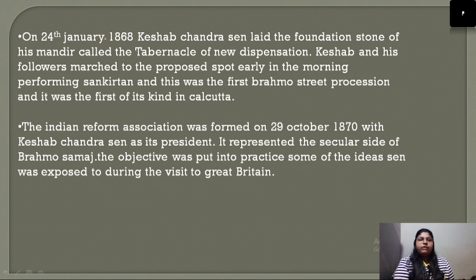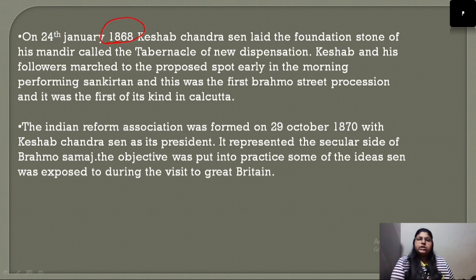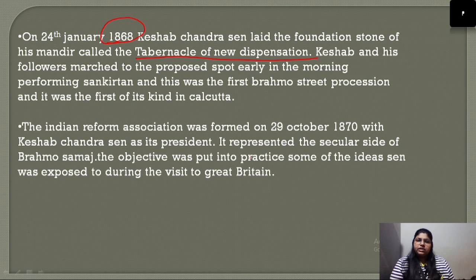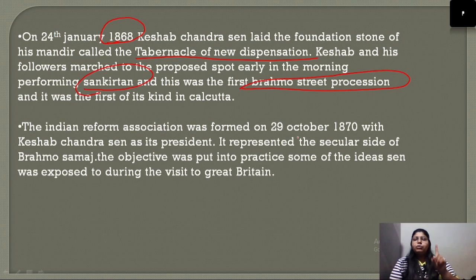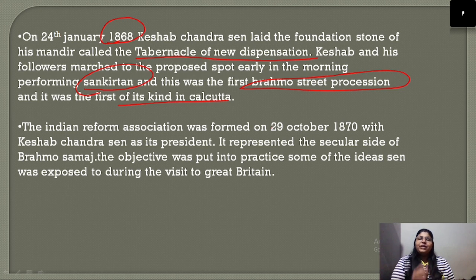On January 24, 1868, Keshav Chandra Sen laid the foundation stone of the Tabernacle of New Dispensation. He and his followers marched to the proposed spot performing Sankirtan — this was the first Brahmo street procession and the first of its kind in Calcutta. Essentially, they had established a temple whose foundation stone was named Tabernacle of New Dispensation.